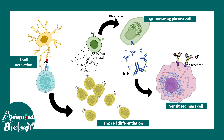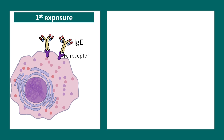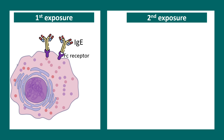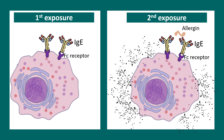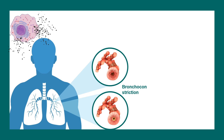After first exposure, nothing happens visually. The problem occurs during the second exposure, when the allergen binds to the IgE cross-linked receptors and leads to severe degranulation of mast cells in an uncontrolled fashion.